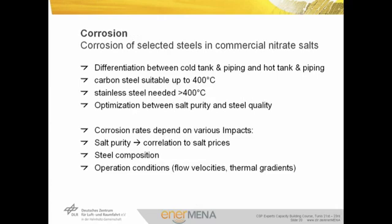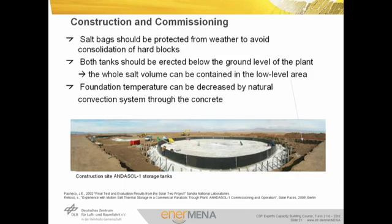Corrosion plays an important role in the design of two-tank molten salt storage systems, and detailed knowledge is important for cost-effective design. Since corrosion is strongly dependent on the molten salt temperature, the design of the cold tank is usually different from that of the hot tank. While carbon steel is suitable up to 400 degrees, stainless steel is needed for operation temperatures exceeding 400 degrees. The purity of the salt also affects the corrosion rate, and a cost optimization should be done for the qualities of both the salt and the steel. The corrosion rate is affected by many factors apart from salt purity and steel composition, and operation conditions also show a significant effect.